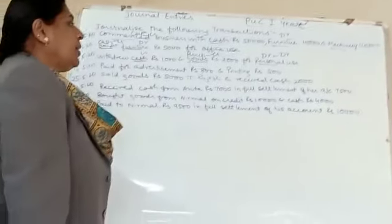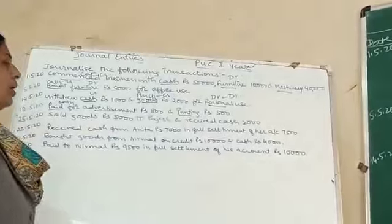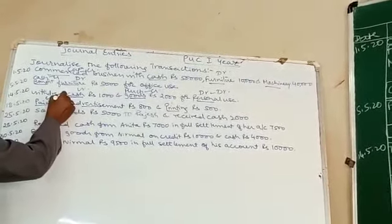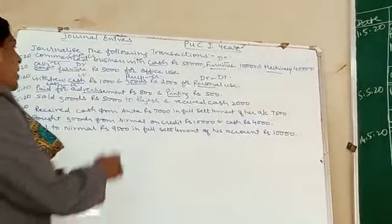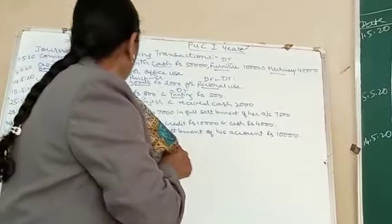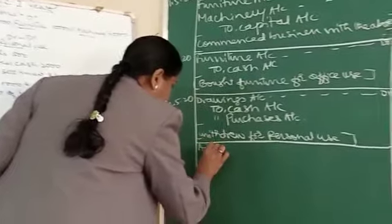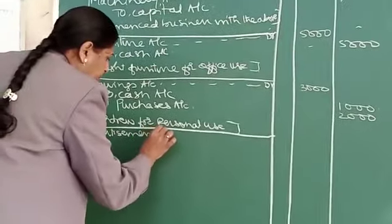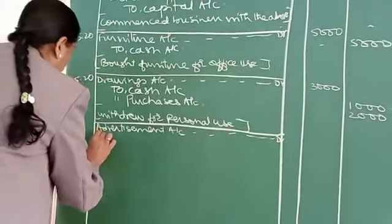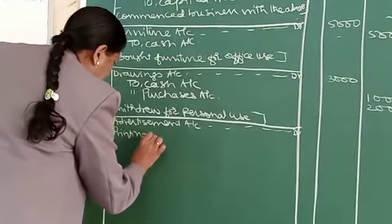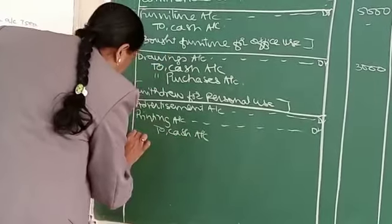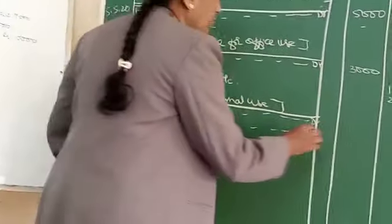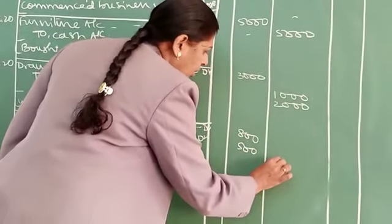Come to the next: paid for advertisement 800 and printing 500. Whenever it is paid, it means you are paying cash. Cash is an asset — you are paying for it, so there is a decrease in cash, which is credit. Advertising and printing are expenses — increase in expenses is debit. So the entry will be: advertising account debit, printing account debit, to cash account. Write the amounts: advertising 800, printing 500, total in the credit column 1,300.